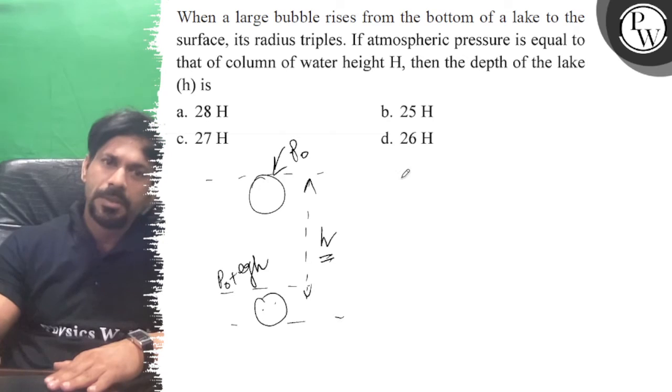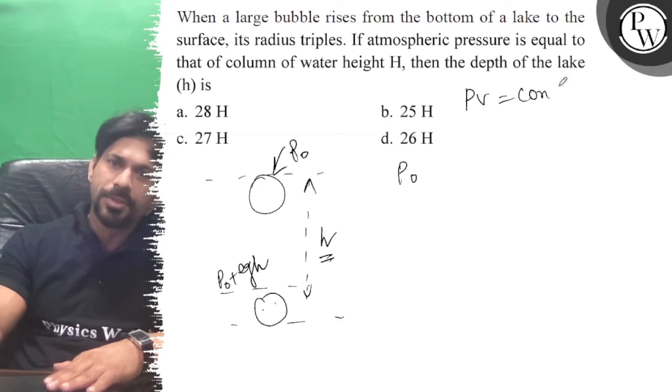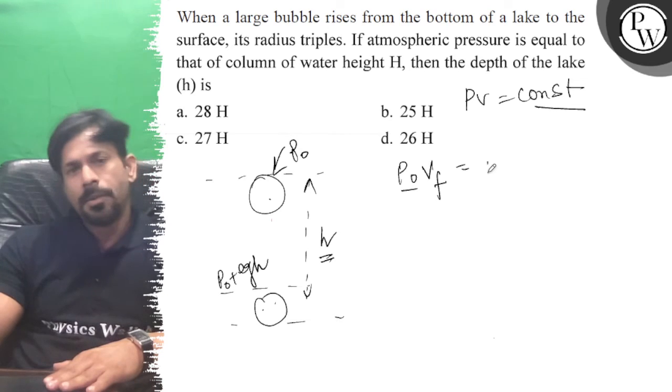How much pressure is here? P₀ plus ρgh. So how much pressure is here? P₀. We can say PV is equal to constant temperature. So P₀ into that volume here V is equal to (P₀ plus ρgh) into V initial.